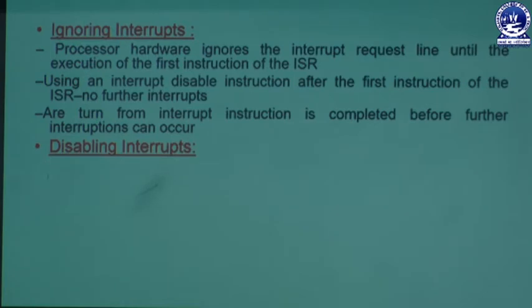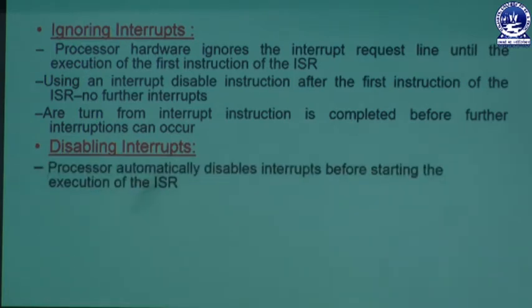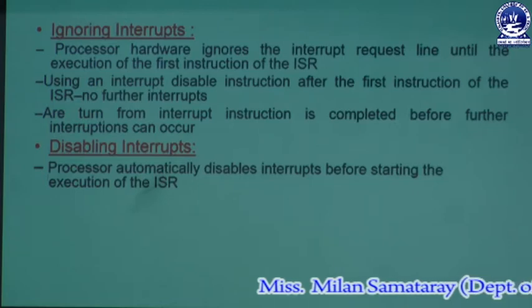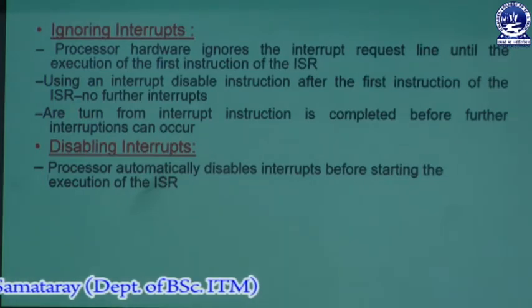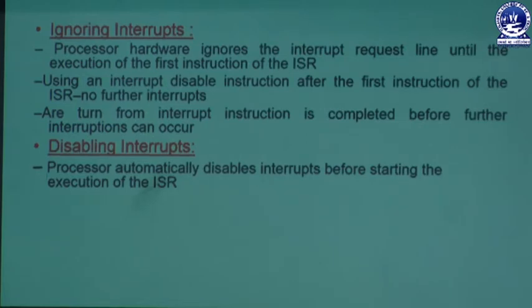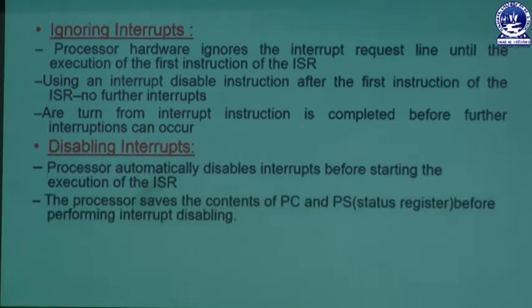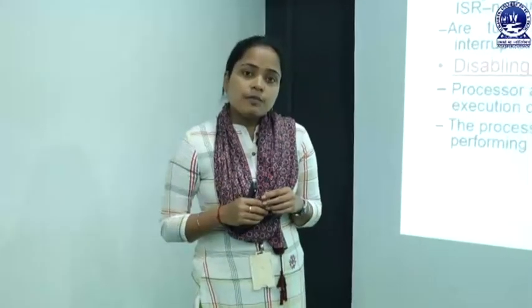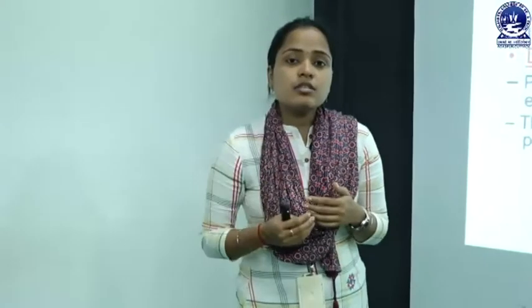The second method is disabling interrupts. In this method, the processor automatically disables the interrupts before starting the execution of the ISR. The processor saves the content of the PC and the status register before performing interrupt disabling, because when an interrupt comes the processor may be executing some other program.